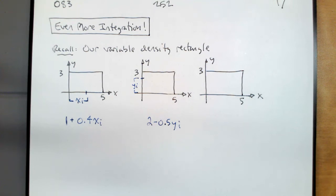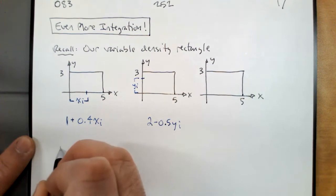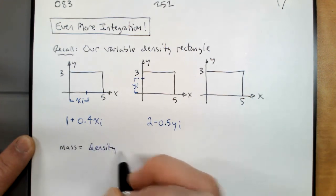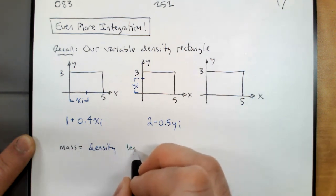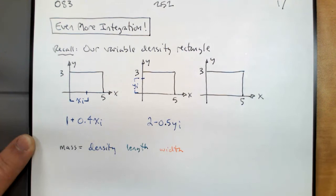If you recall, this week we've been looking at this rectangle which has variable density, and we started carving pieces out of our little rectangle with lines and with parabolas. The principle was always the same: mass is equal to density times length times width. That idea was the same all throughout.